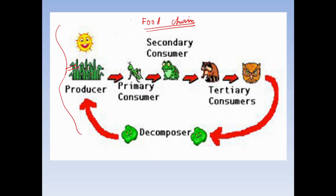Green plants produce food — they actually entrap solar energy and store it with the help of carbon dioxide and H2O in the presence of chlorophyll. They produce carbohydrate, and carbohydrate is nothing but the food.